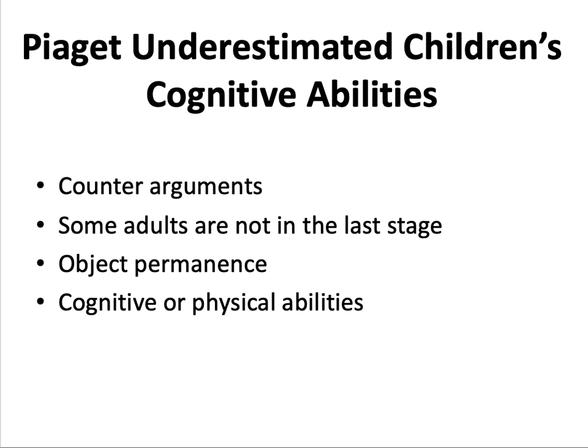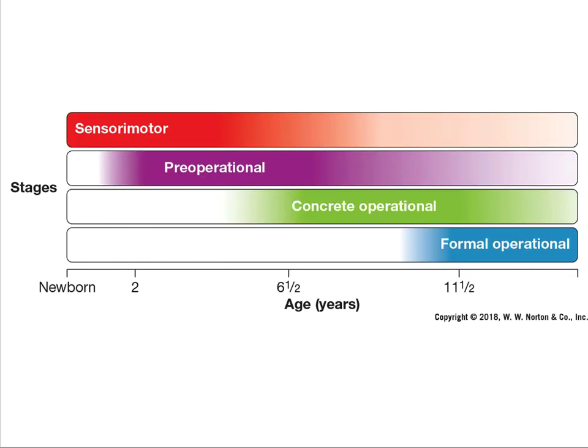In his various testing protocols, Piaget may have confused infants' cognitive abilities with infants' physical capabilities. Modern interpretations view Piaget's theory in terms of trends, not rigid stages. Children shift gradually in their thinking over a wider range of ages than previously thought, and they can demonstrate thinking skills of more than one stage at a time. This concludes part one of the lecture. Please listen to part two.